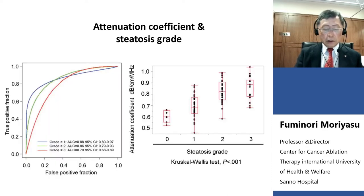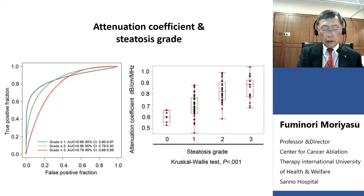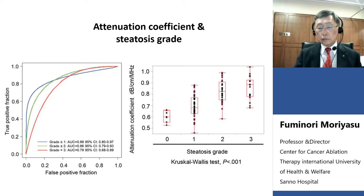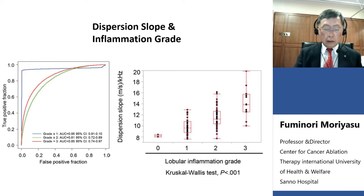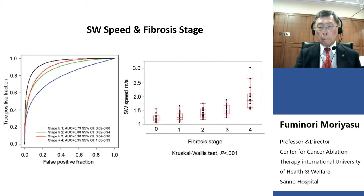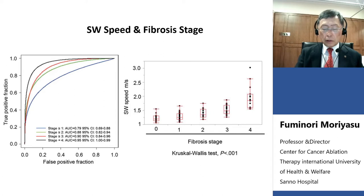This is the correlation between steatosis grade from liver biopsy and ATI data — good correlation between pathology and ATI data is observed. This is the correlation between inflammation grade versus dispersion slope. And this is the correlation between fibrosis stage and shear wave speed.